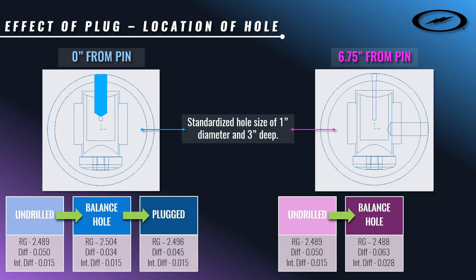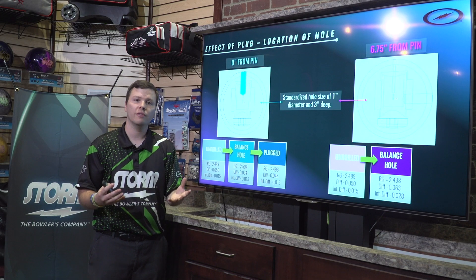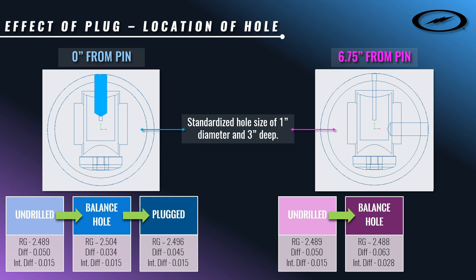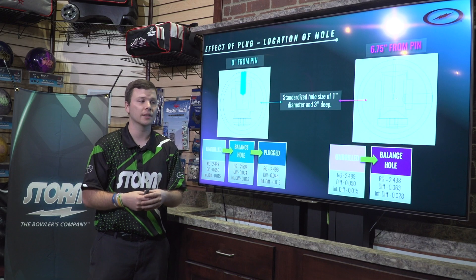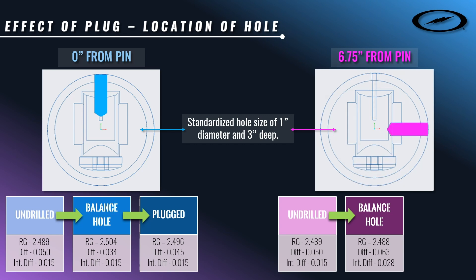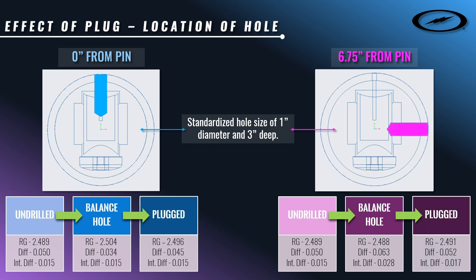What happens when we add some plug into the bowling ball? Looking at the zero-inch pin, the RG value falls somewhere in between the two — but it's still a little bit higher than when it was initially not drilled. Total differential went from 50 all the way down to 34, then comes all the way back to 45 — so a lot of that change in total differential has been brought back, but not quite 100%. Intermediate stays the same, which makes sense. Looking at the six and three-quarter ball, RG is a little bit higher than even the undrilled number. Total diff goes from 50 up to 63 and returns back to 52 — almost all of that differential is recovered.